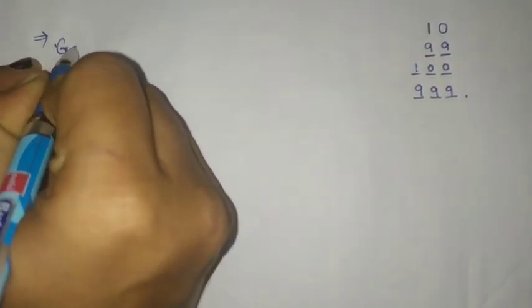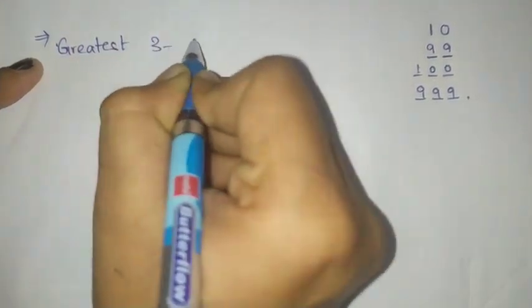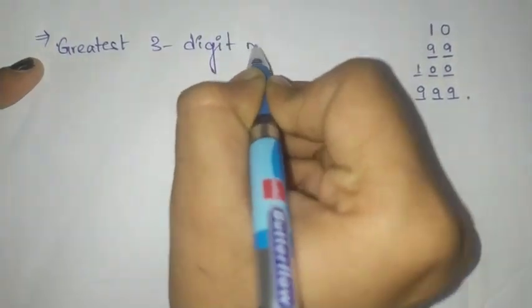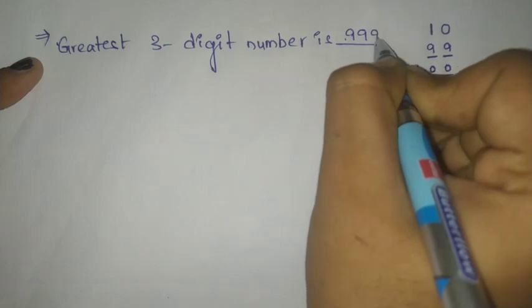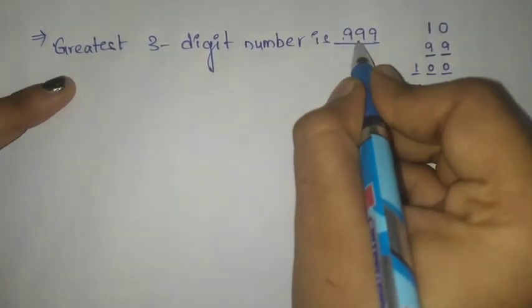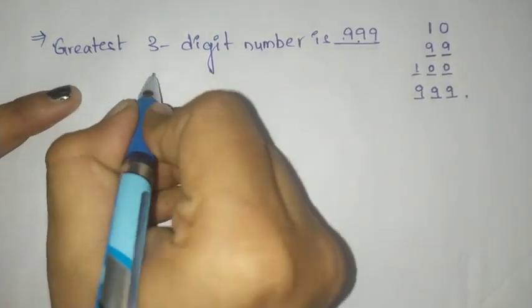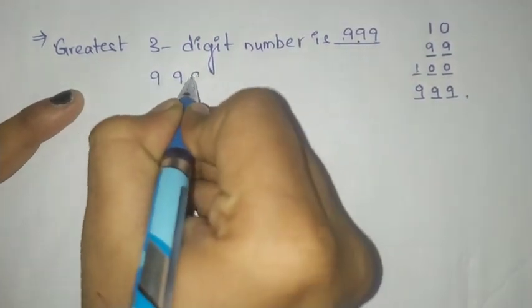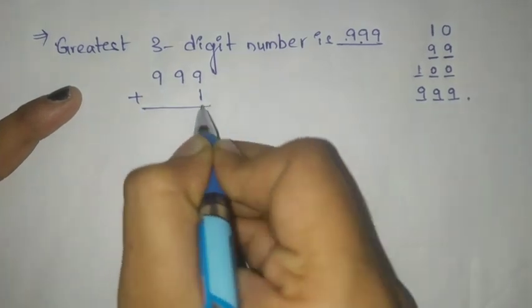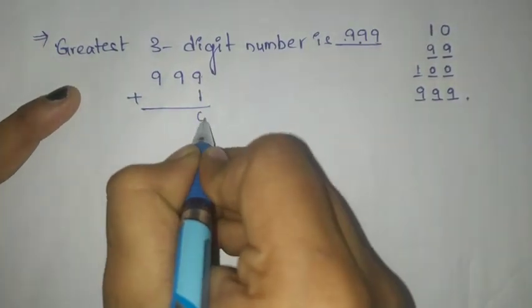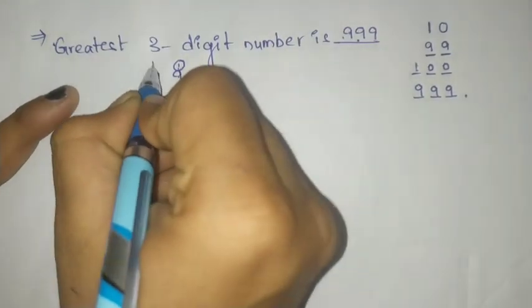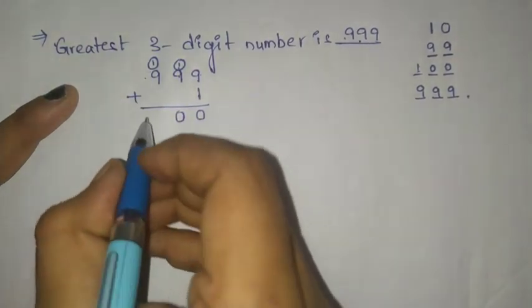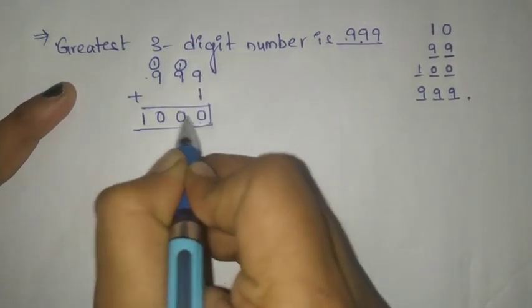Now look here. The greatest three digit number is 999. If we add 1 to this number, what will we get? Let's see: 999 plus 1. 9 plus 1 is 10, write 0 here, 1 taken as carry. 9 plus 1 is 10. We got 1000.